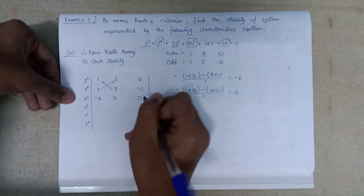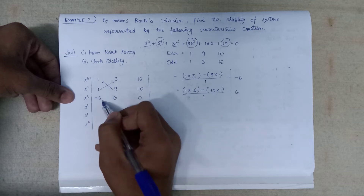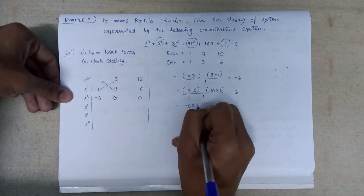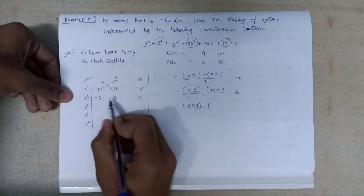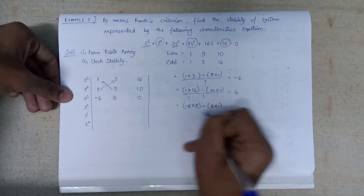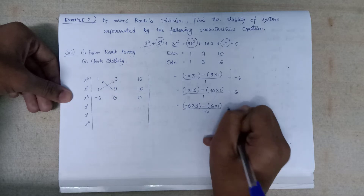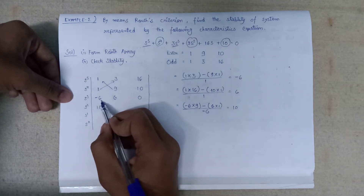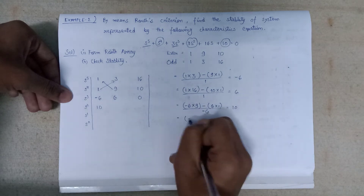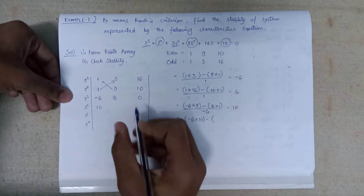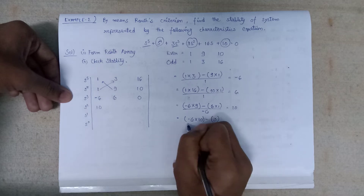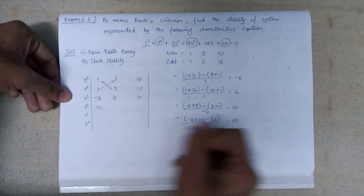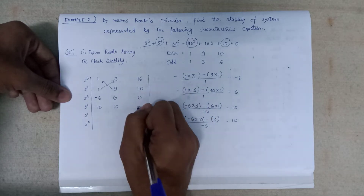Next, we take the two elements of the first column. Minus 6 multiplied by 9, minus 1 multiplied by minus 6, the whole divided by minus 6, gives 10. Then minus 6 multiplied by 1 divided by minus 6 also gives 10. The remaining entry is 0.